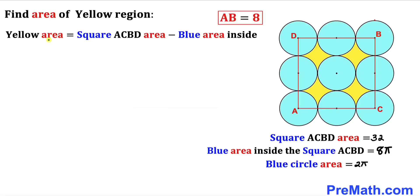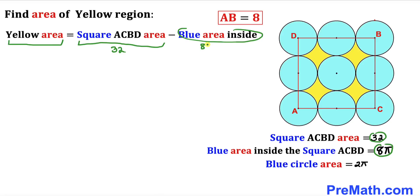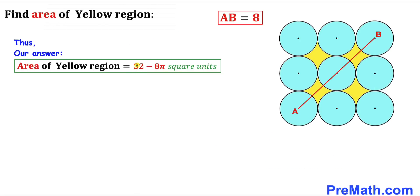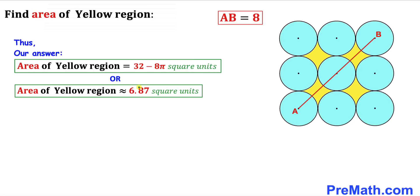Here is our final step. The yellow shaded area equals the square area minus the blue area inside the square: 32 minus 8π. So the area of the yellow shaded region turns out to be 32 minus 8π square units, which is approximately equal to 6.87 square units.